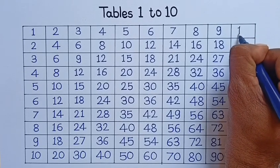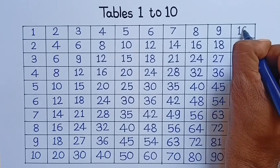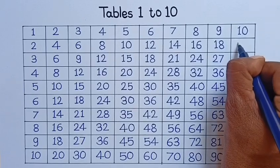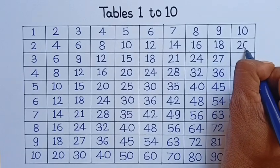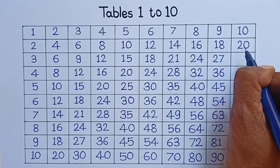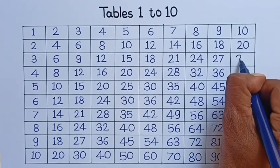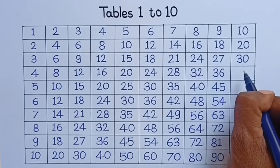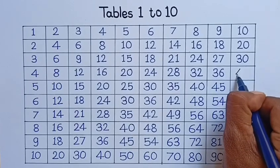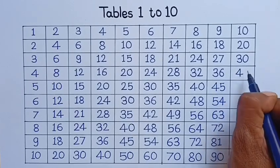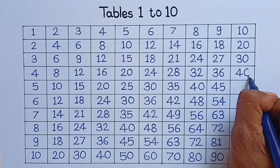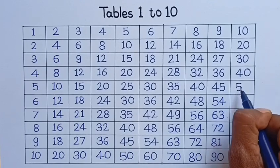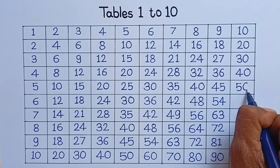10, 1 is 10. 10, 2 is 20. 10, 3 is 30. 10, 4 is 40. 10, 5 is 50.